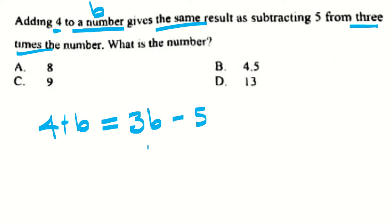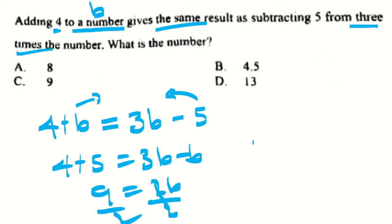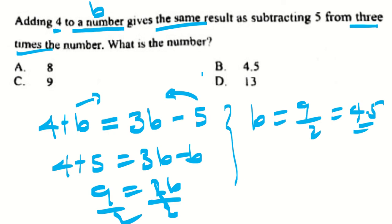This kind of word problem needs real reading and proper interpretation. Adding 4 to a number means 4 plus b. Gives the same result as subtracting 5 from 3 times the number means 3b minus 5. Then reshuffle — shift b to the right side and bring 5 to the left: 4 plus 5 equals 3b minus b, so 9 equals 2b. Divide both sides by 2, so b equals 9 over 2, which is 4.5. The answer is found in B.